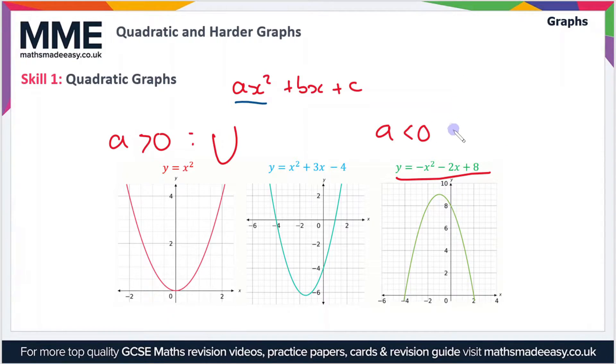If a is less than zero, as in this graph on the right, then the graph will be inverted U shaped. We normally describe these in terms of a minimum point—the lowest point on the graph—or a maximum point—the highest point on the graph. These maximum and minimum points are known as turning points, but we'll cover those in a separate topic.